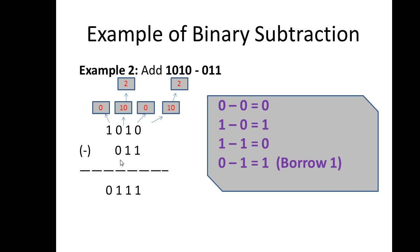So 1 minus 0 equals 1, and that part is 0. Then 2 minus 1 equals 1, so 1 is placed there. 1 minus 0 equals 1. The final part is 0, so we write 0 there. The final answer for example 2 is 0111.